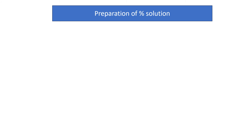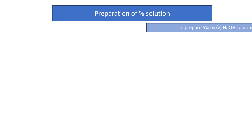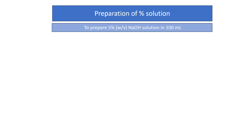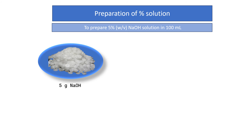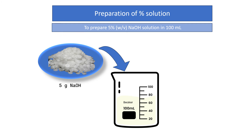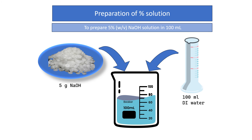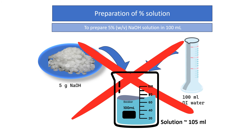Now, preparation of percentage solution. One common mistake most of us make while preparing percentage solution — let us see with the example of preparing 5% weight by volume NaOH solution in 100 ml. First we weigh 5 grams of NaOH and transfer it into a glass beaker. Then we add 100 ml of water from a measuring cylinder and dissolve the NaOH completely in it with the help of a glass rod. At this stage the solution is hot. This is the completely wrong way of preparation.